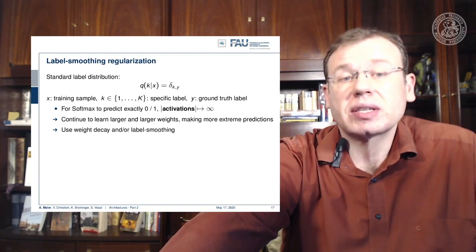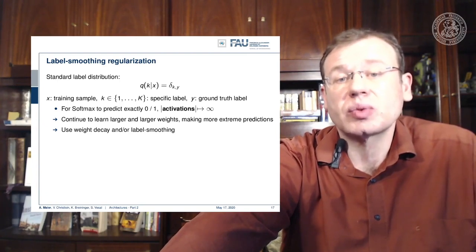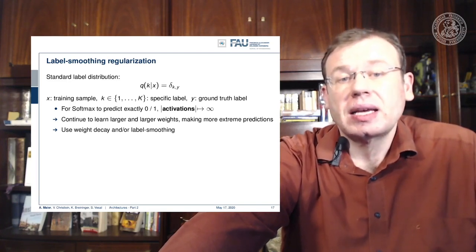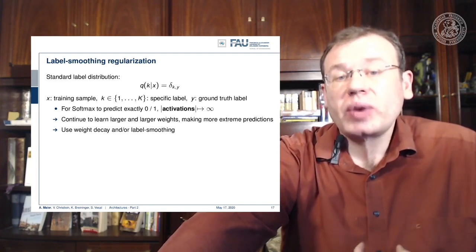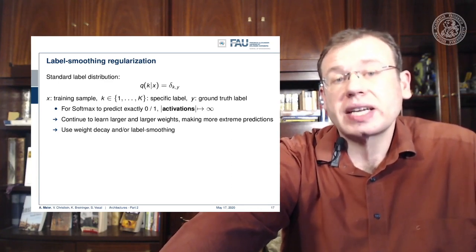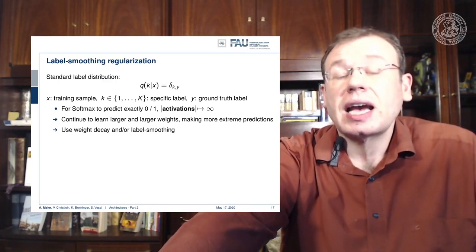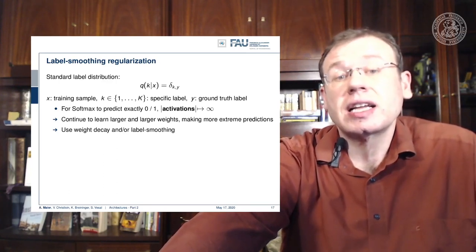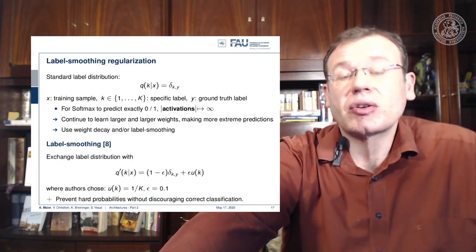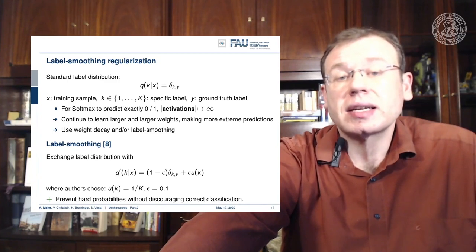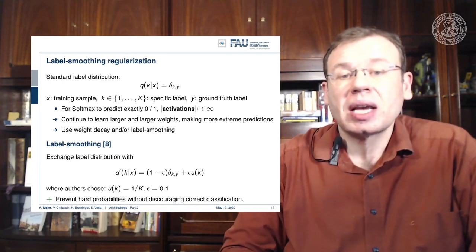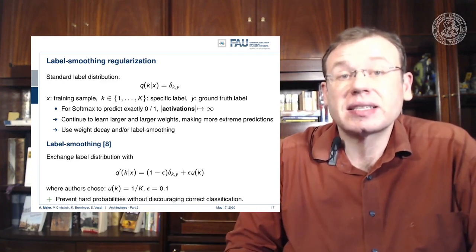This is not so great because we continue to learn larger and larger weights, making them more and more extreme. We can prevent that if we use weight decay, which will prevent our weights from growing dramatically. We can also use in addition label smoothing. The idea of label smoothing is now that instead of using only the Dirac pulse, we kind of smear the probability mass onto the other classes.